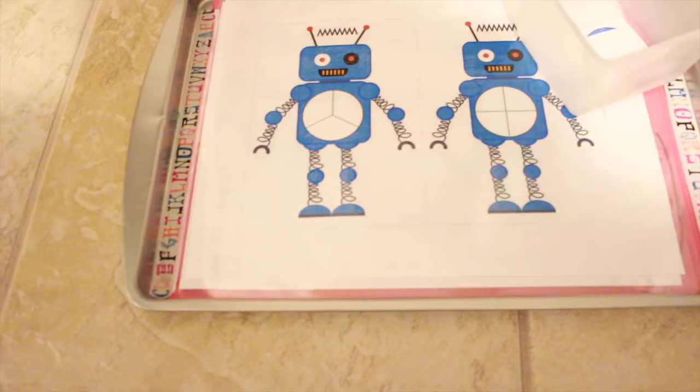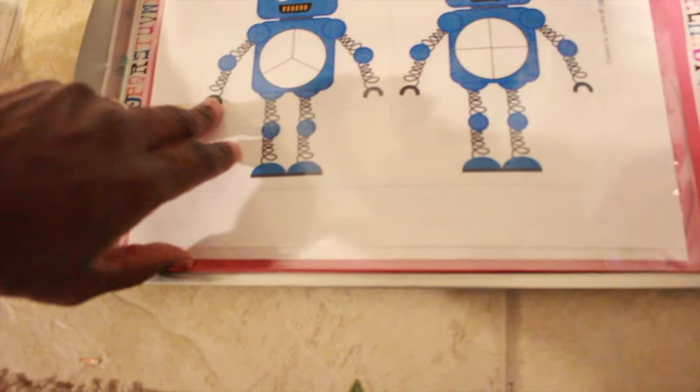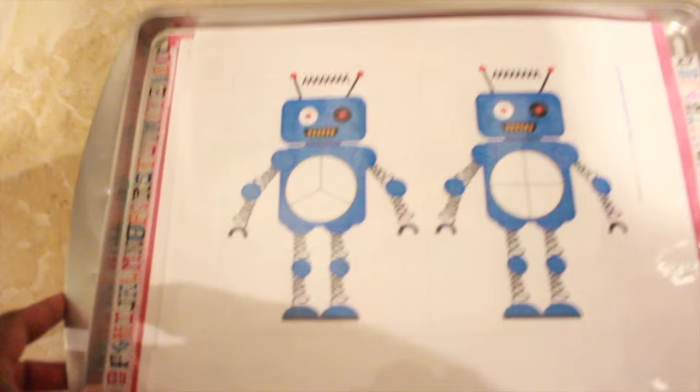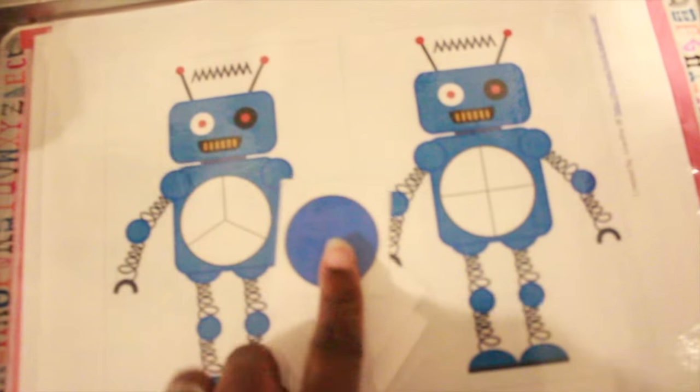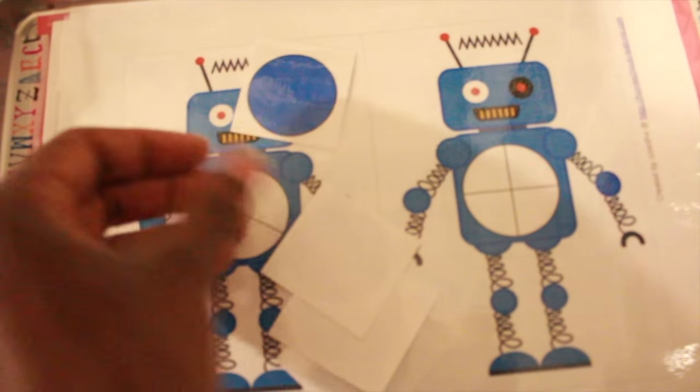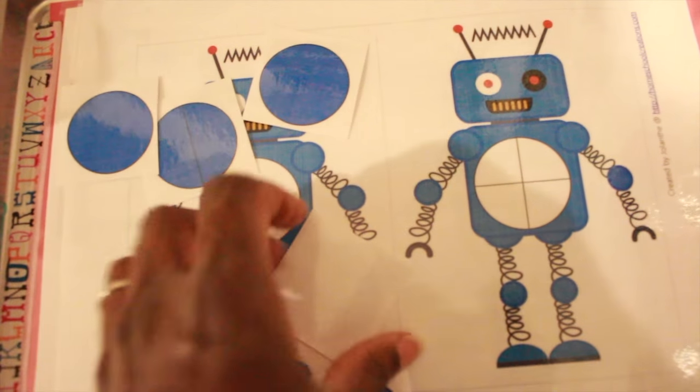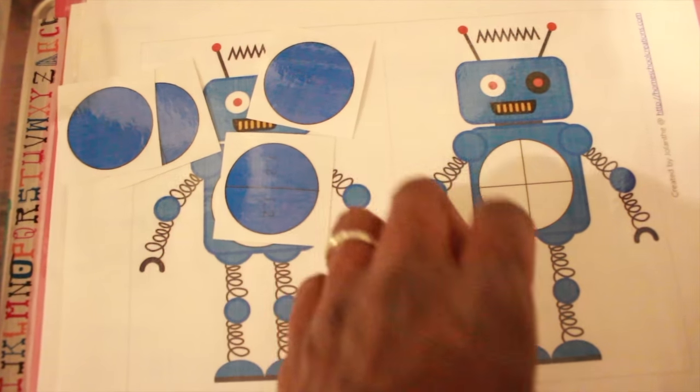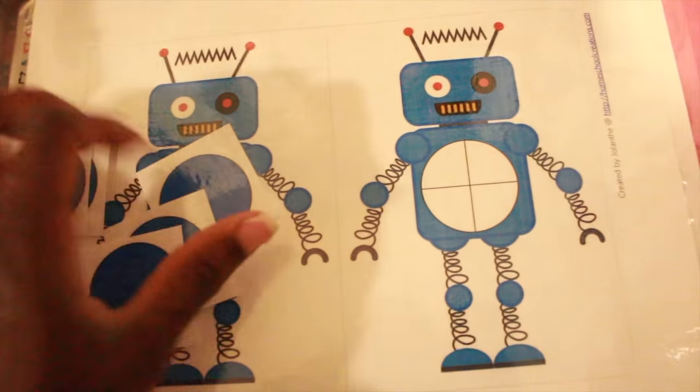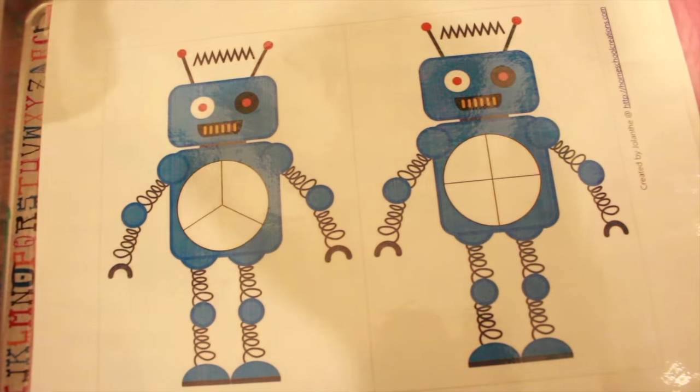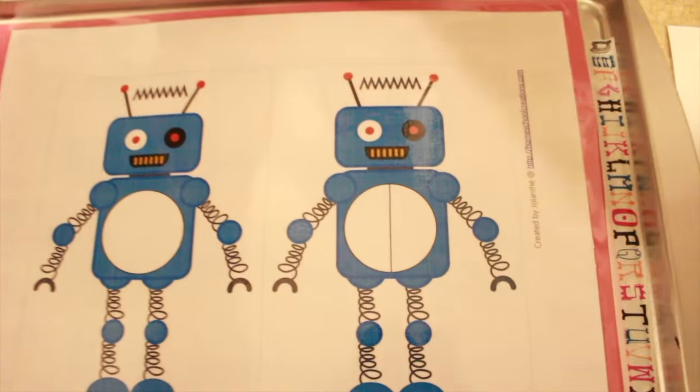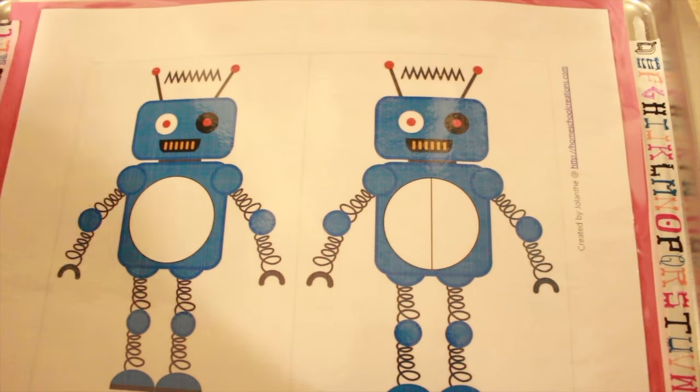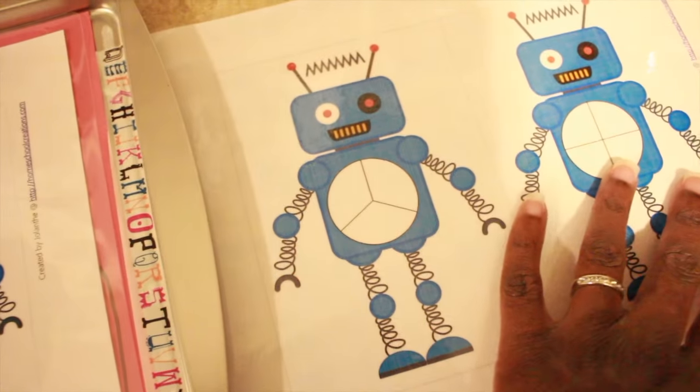This printable I believe is also from homeschoolcreations.com in that printable pack. Yes, it is. So this is fractions, fraction robots. So what he does is he matches the actual fraction card to the robot. So pretty much it breaks it down by wholes, halves, quarters, and thirds, I believe are all included in here. And he just matches them up to the robots. There's two sheets of robots, there's four different robots. And what I did is I just printed it out, I laminated it, and he just matches the correct fraction circle to the robot. So wholes, halves, thirds, and quarters. So I introduced those concepts to him over the week.